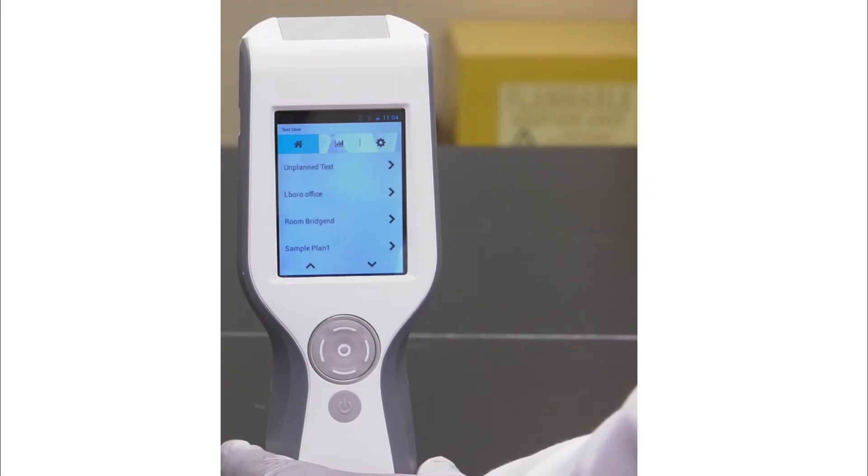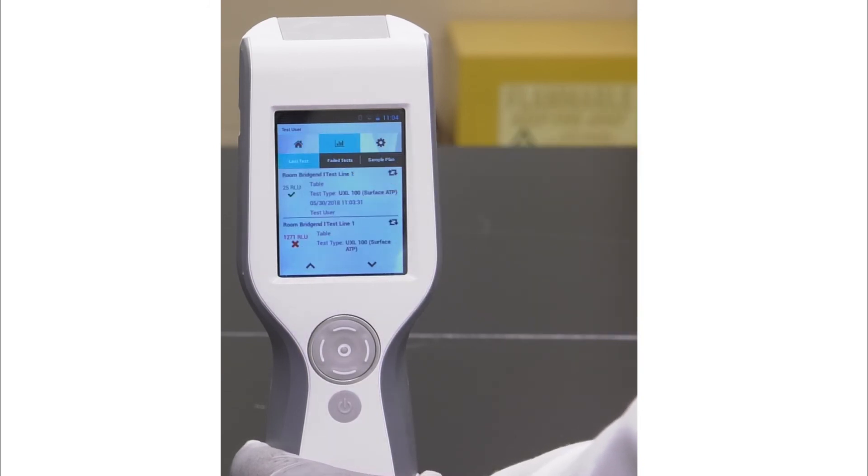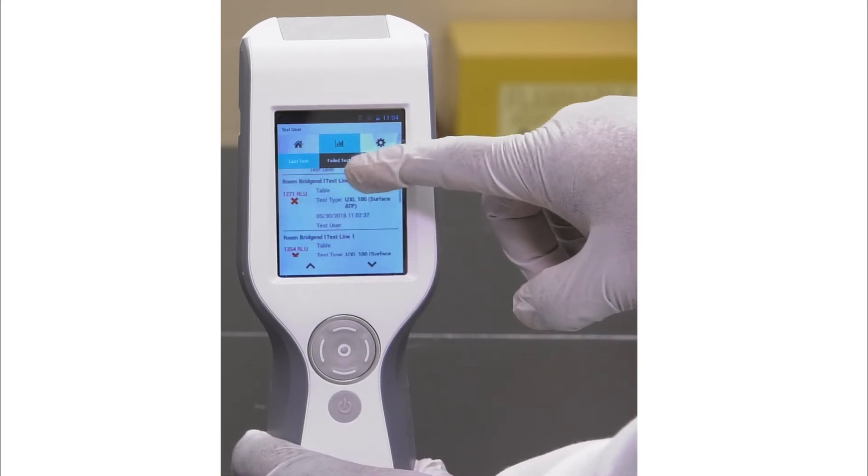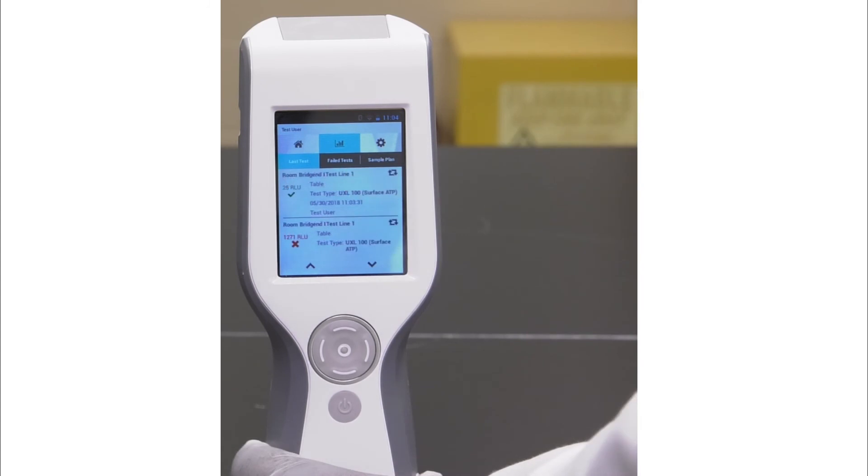At any point, you can go to the result page, tap the middle tab at the top, and review the tests you have taken recently, along with their results. Test results are color-coded. Green for pass, red for fail, and yellow for caution. The display also includes other details associated with the test point. Please note that unplanned tests are not color-coded, as no pass-fail values are defined for them.